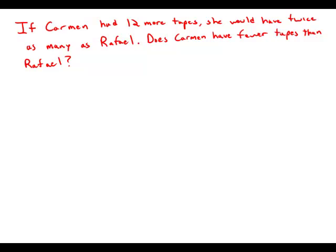If Carmen had 12 more tapes, she would have twice as many tapes as Raphael. Does Carmen have fewer tapes than Raphael? Notice, incidentally, we have a completely grammatically correct comparison in the first sentence, and the use of the word 'fewer' in the second sentence is grammatically correct also. Just a couple of grammar points to keep in mind for sentence correction.